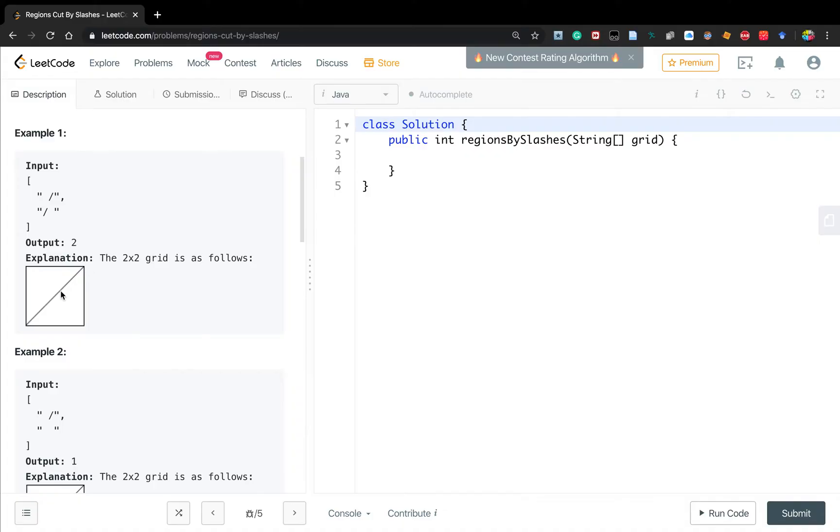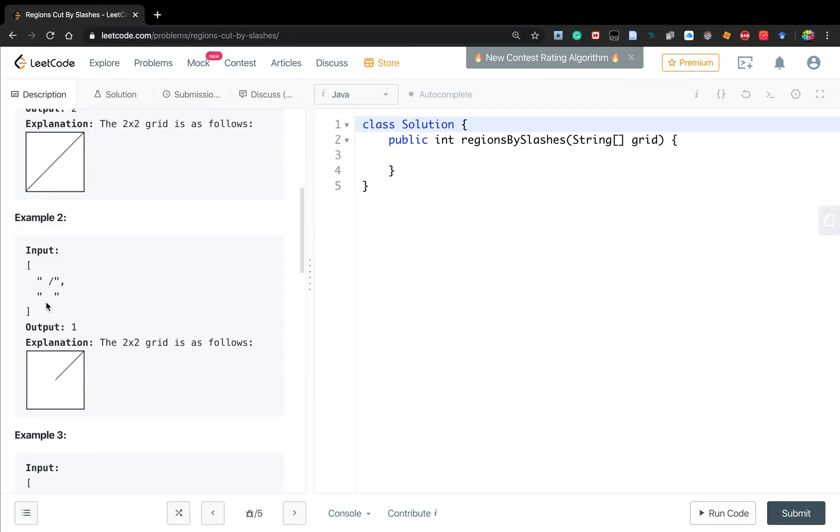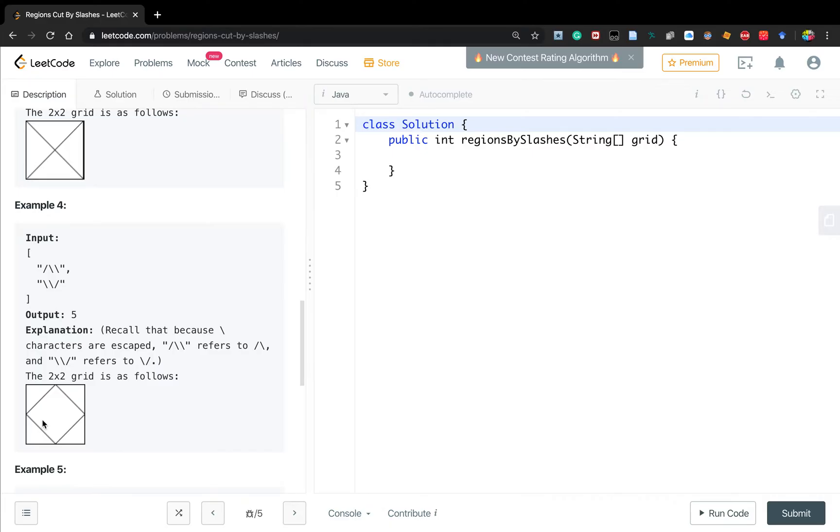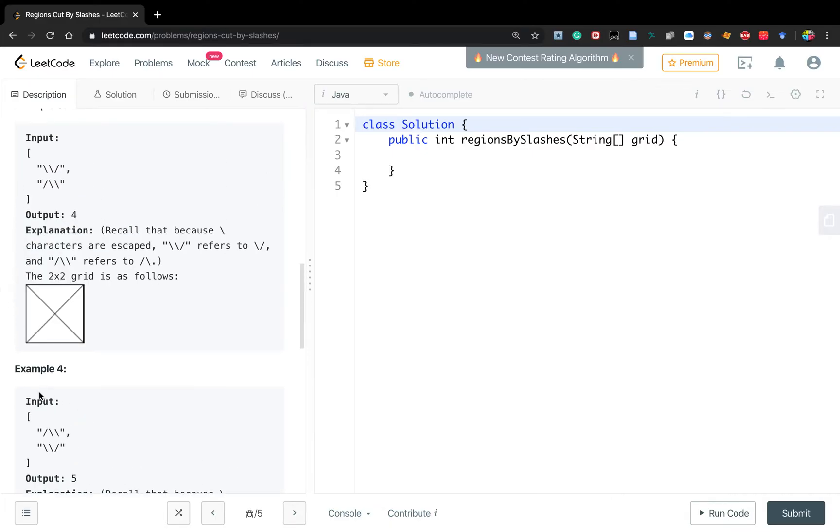Let's see the examples. In this case, two slashes can be continuous so it divides the area into two parts, so we return two. In this example, even though we have one slash, the whole part is also connected so there's only one connected component. In this case with two slashes and two backslashes, it divides the area into four parts so we return four. In this example we divide it to five parts.